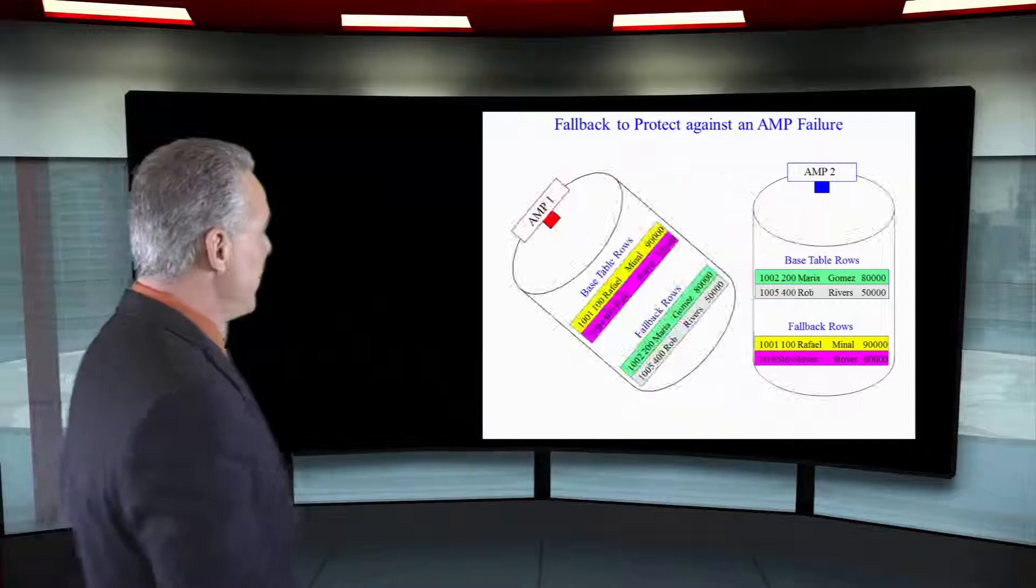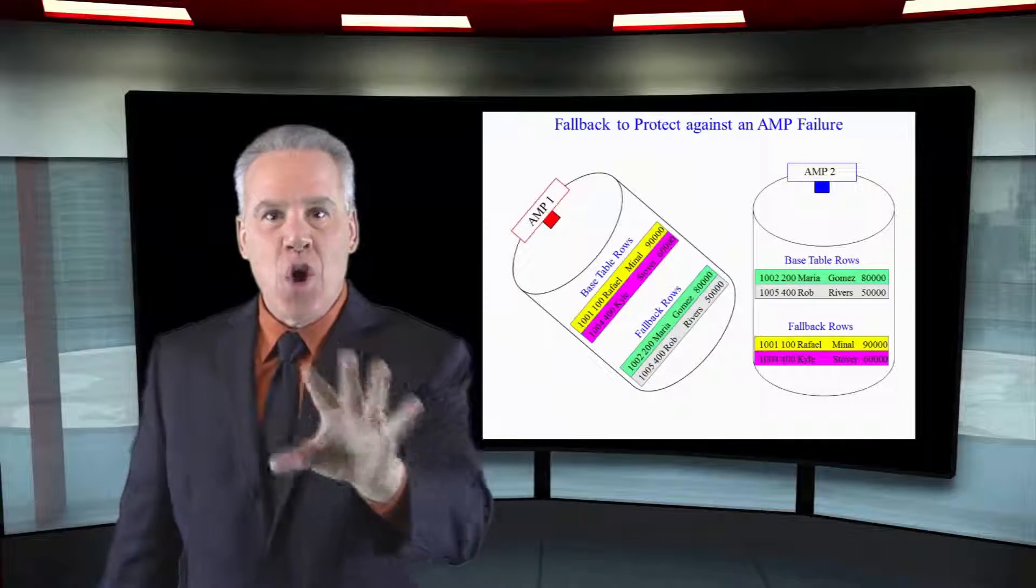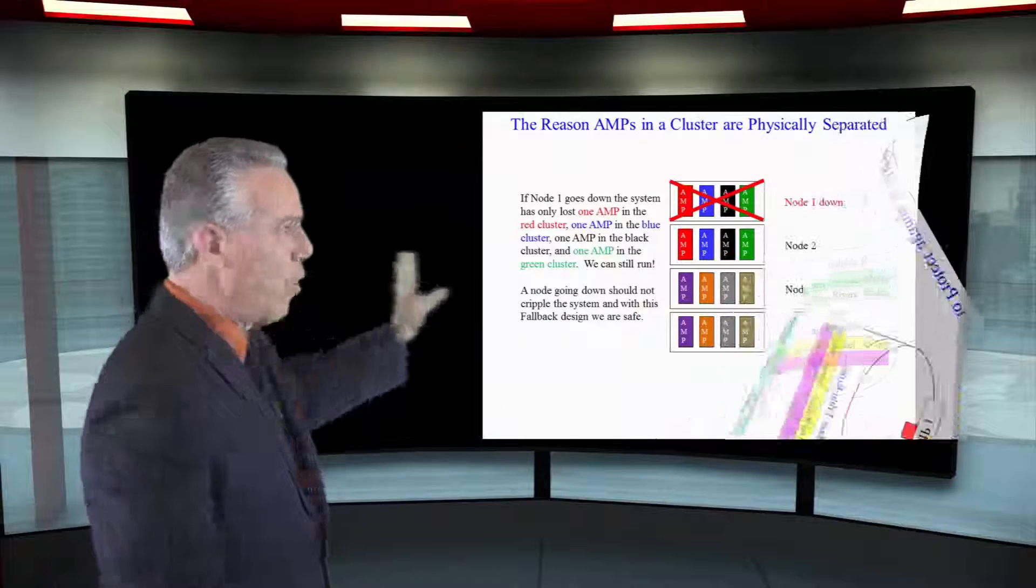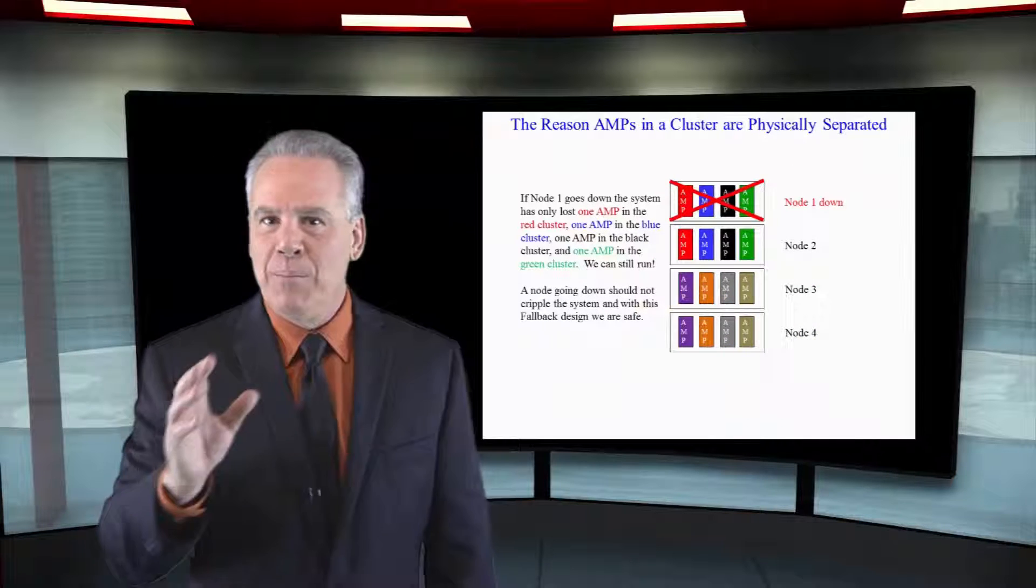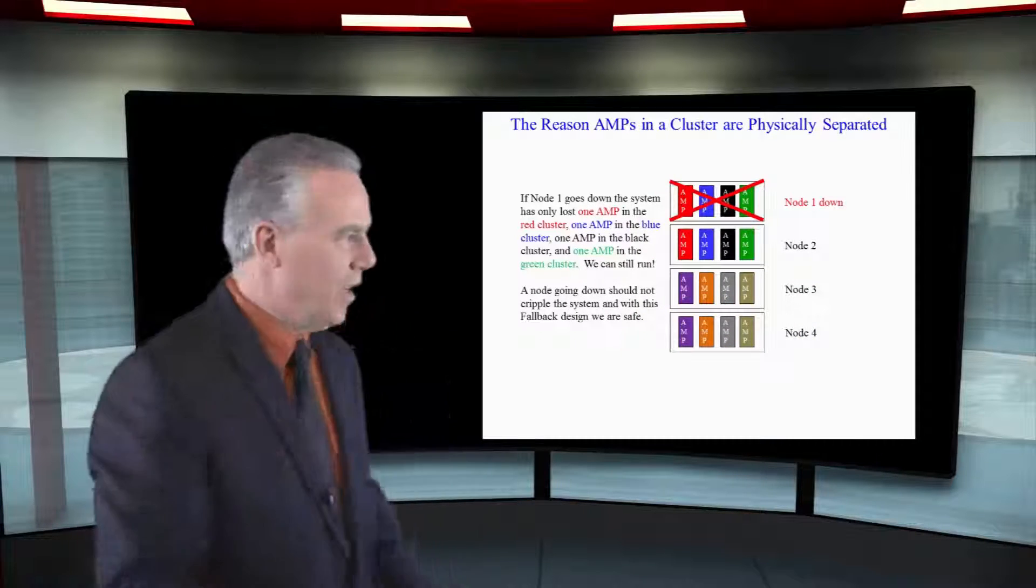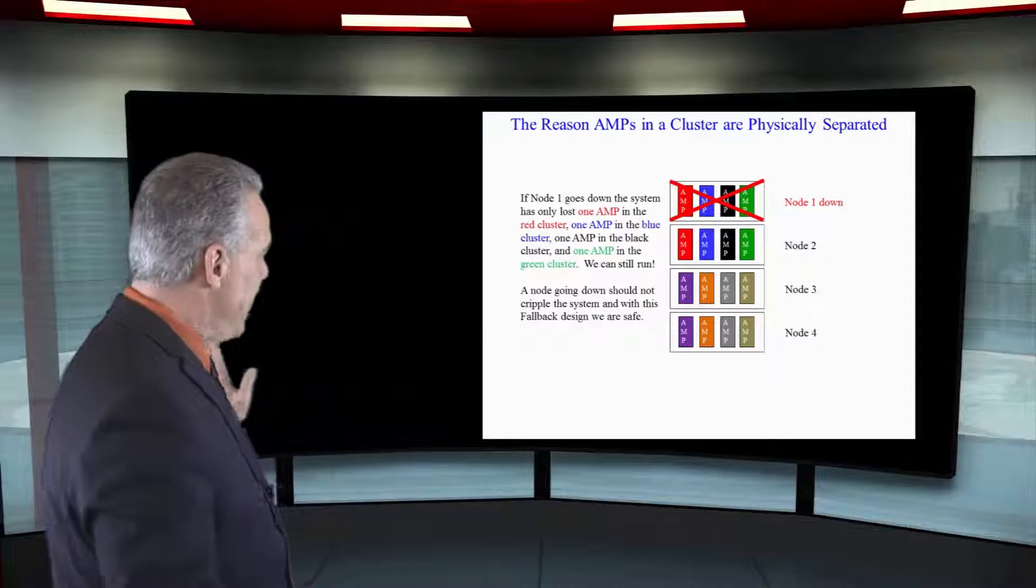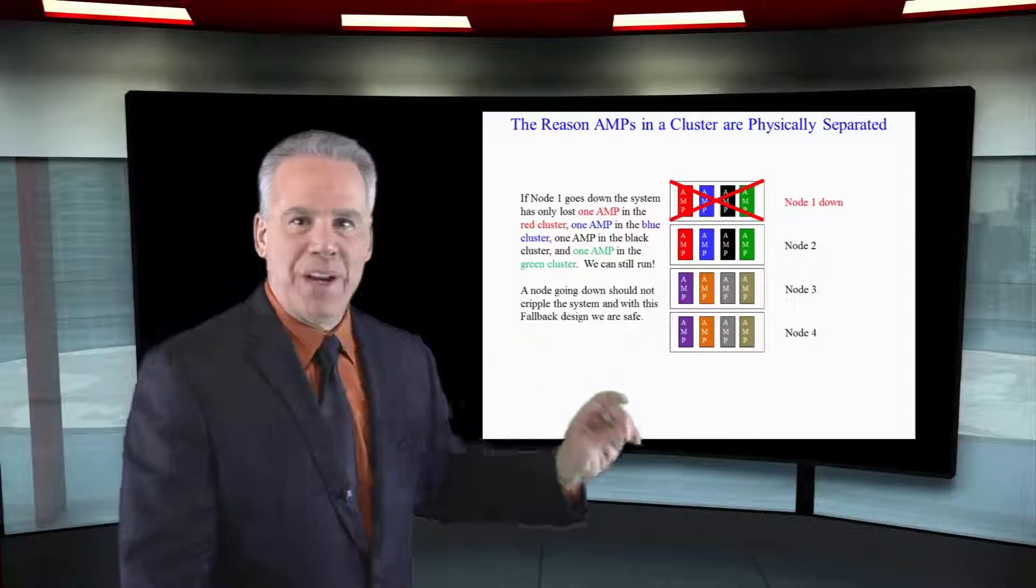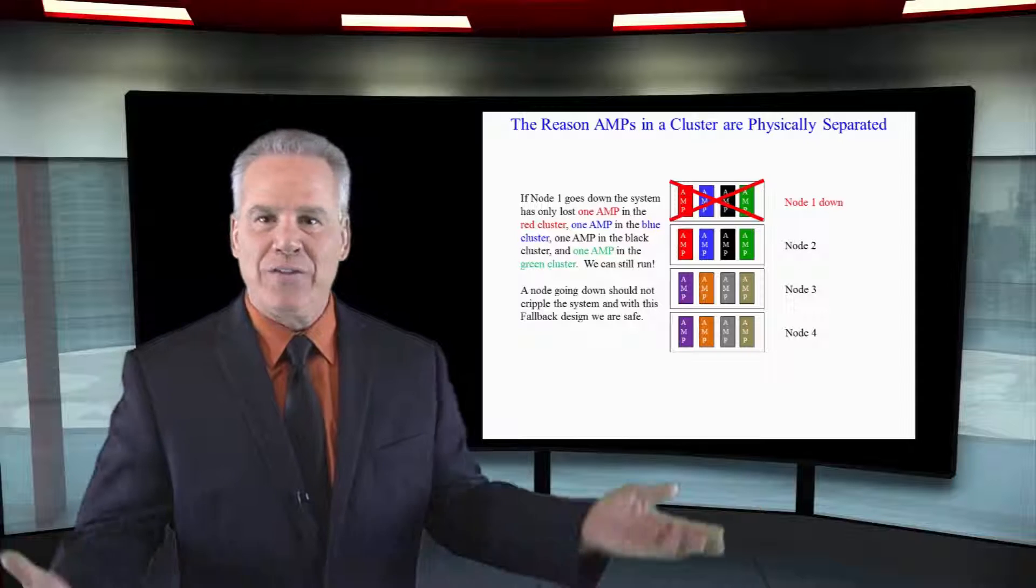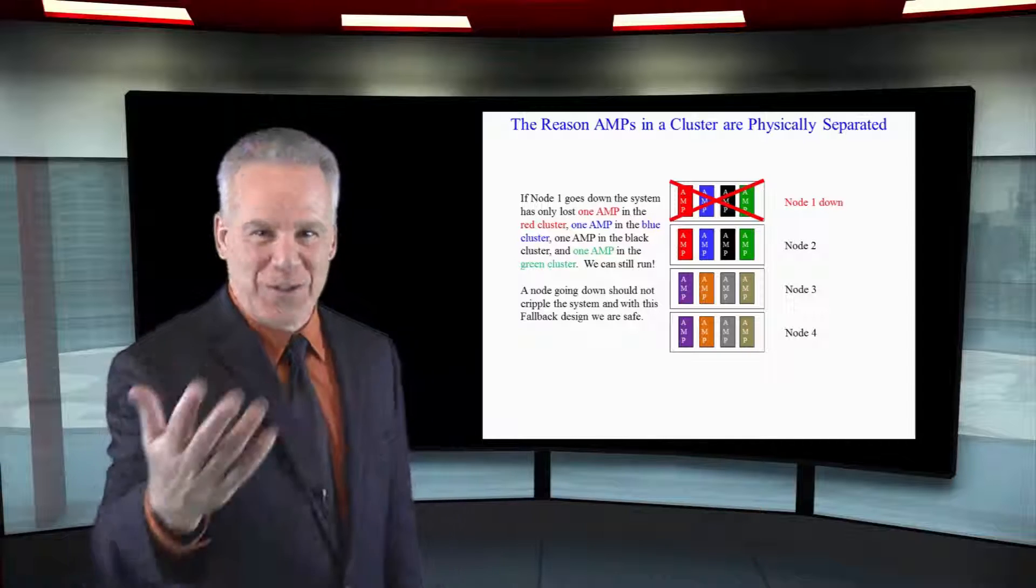Now, we've lost the entire node one, all four AMPs gone, but we're still running because in node number two, that data's been backed up in their buddy AMPs, and they'll just have to do a little bit more work to retrieve it.